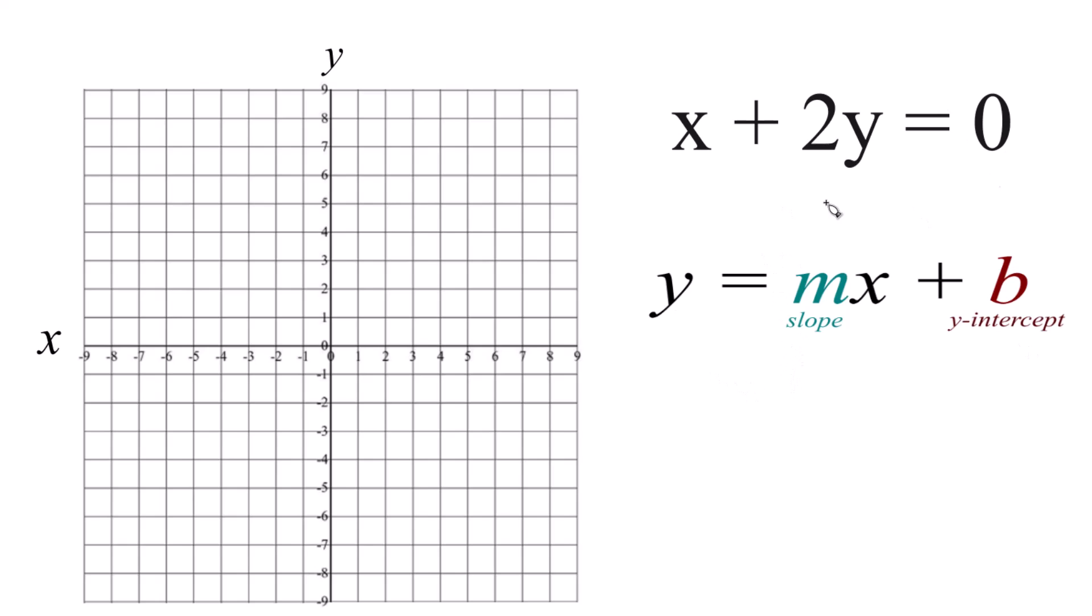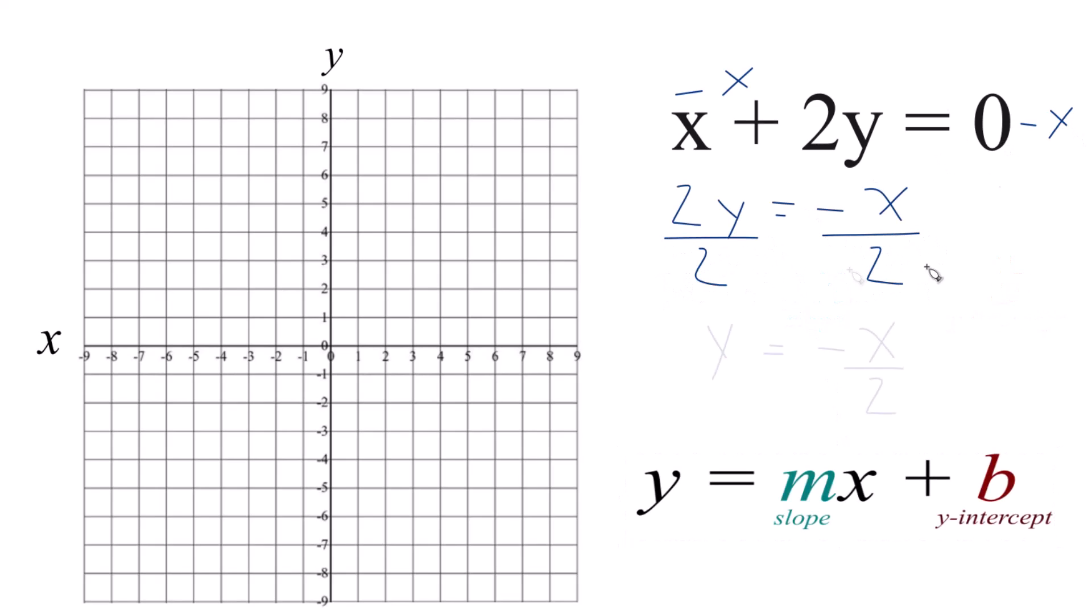So let's rearrange this so it's in slope-intercept form. Let's subtract x from each side, and then let's divide both sides by 2 to get y by itself. And this is in slope-intercept form.